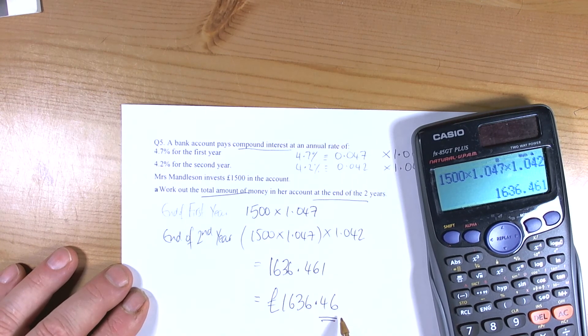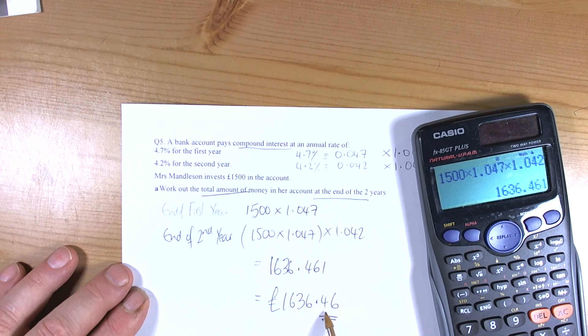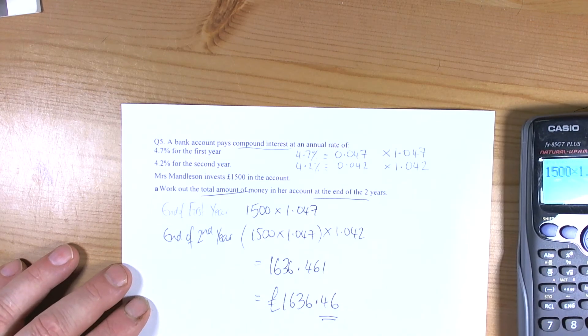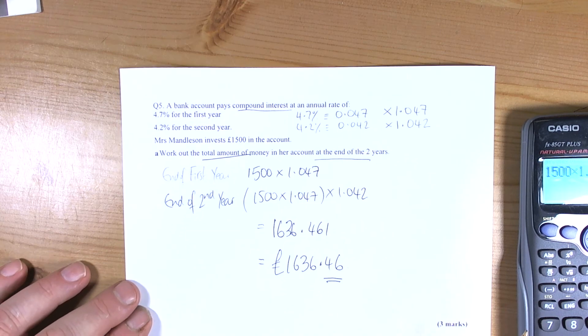But it's money, so it becomes £1,636.46. Really important that you remember with money questions that you write down a decimal, two decimal places only for the answer. So that's the compound interest question.